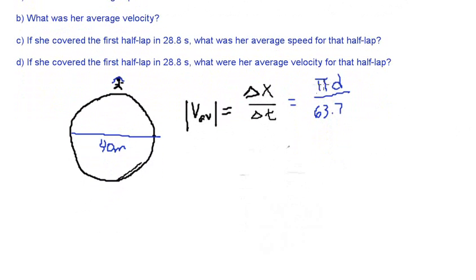Okay, so this is just plugging in numbers. Pi is 3.14. The diameter of the circle is 40 meters. And the time is 63.7 seconds. And let's see what this is on the calculator.